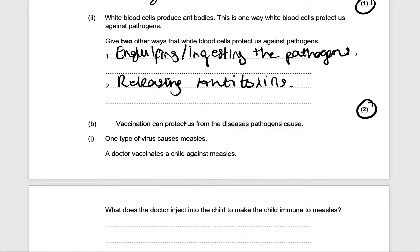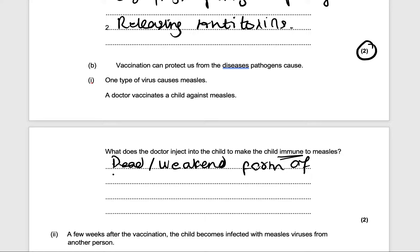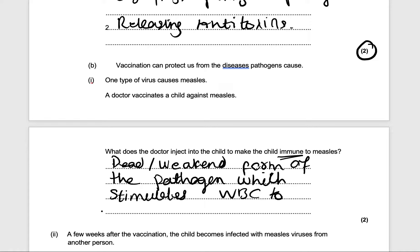Vaccination can protect us from the diseases pathogens cause. One type of virus causes measles. A doctor vaccinates a child against measles — what does the doctor inject into the child to make the child immune to measles? It's worth two marks. To make the child immune, the doctor injects the dead or weakened form of the pathogen, which stimulates the white blood cells to produce antibodies. That will get you two marks.